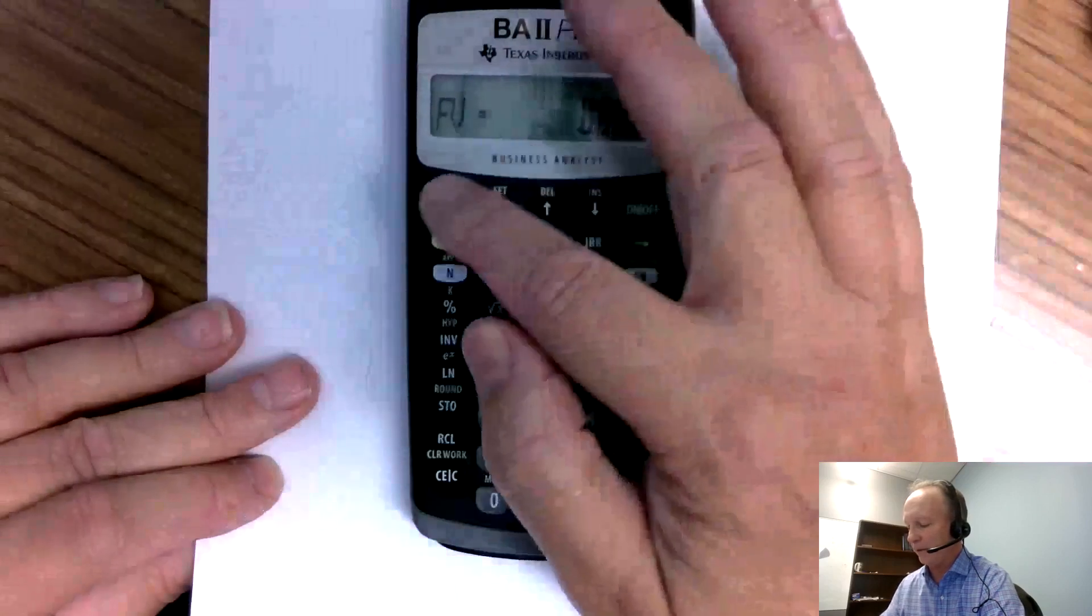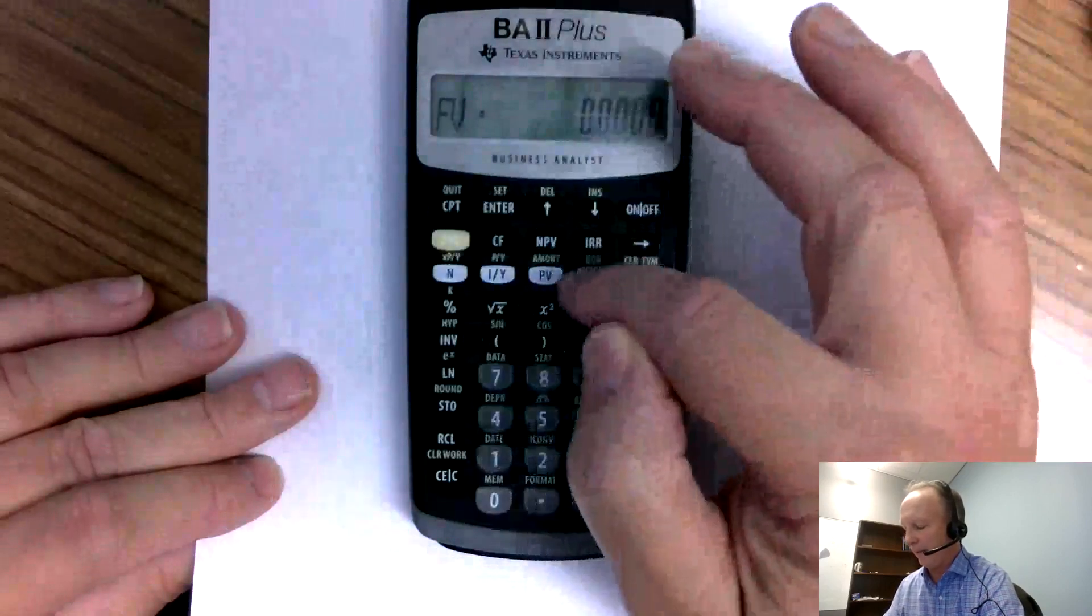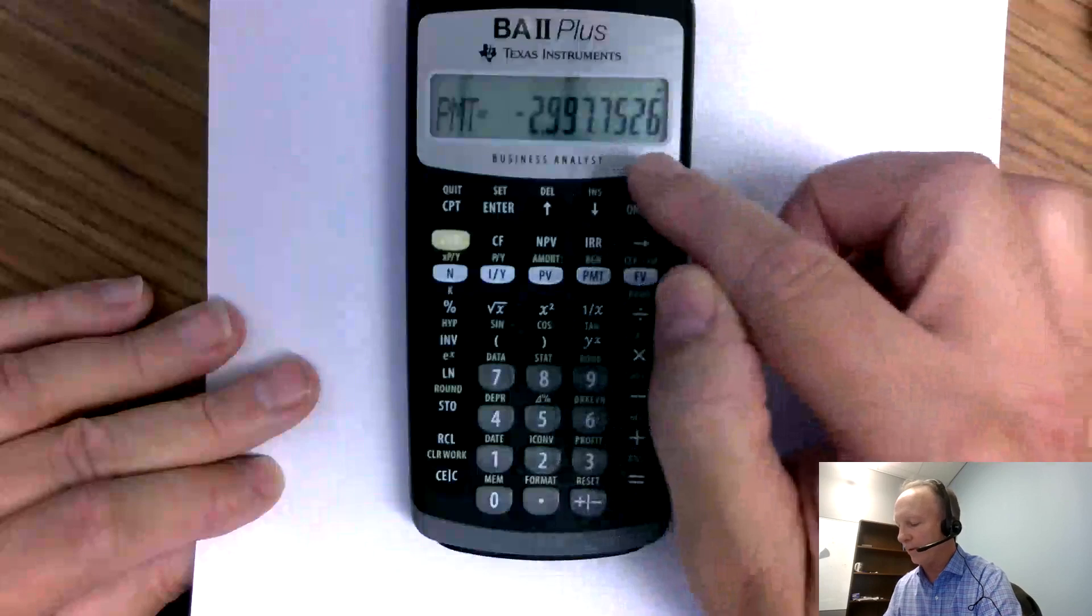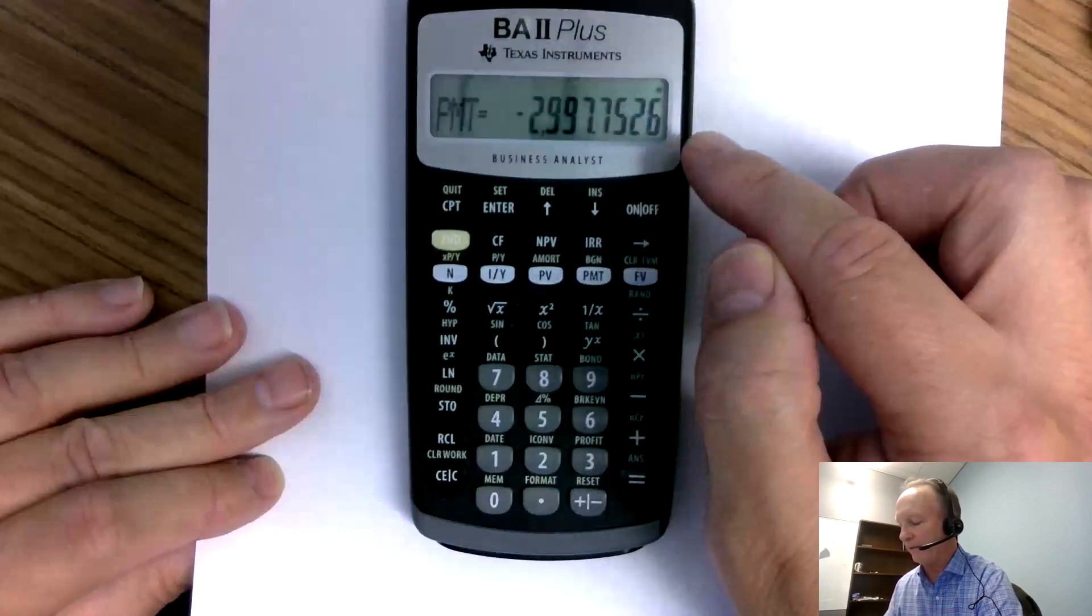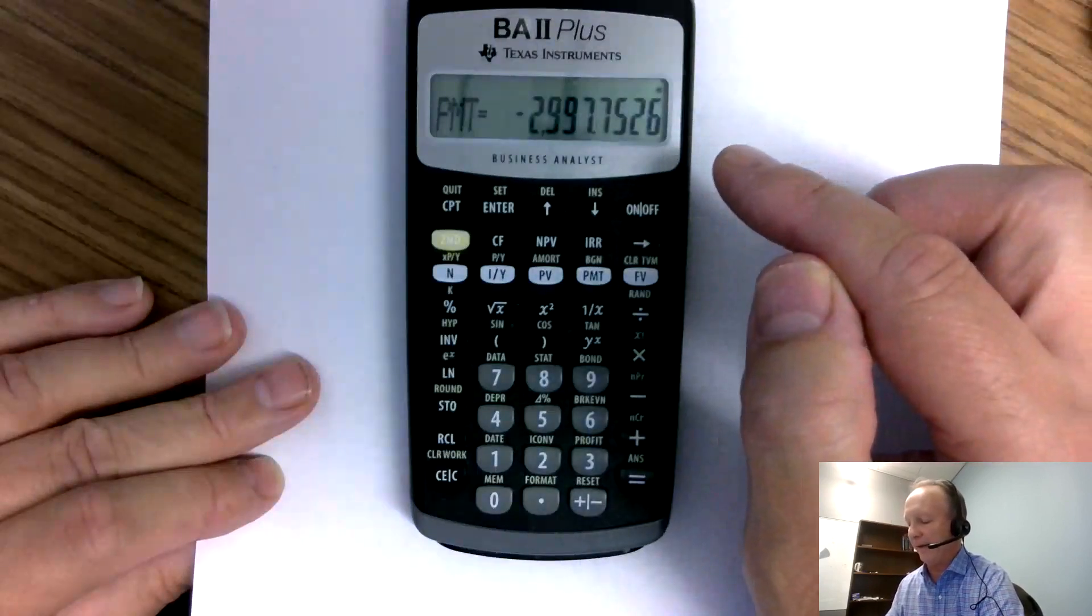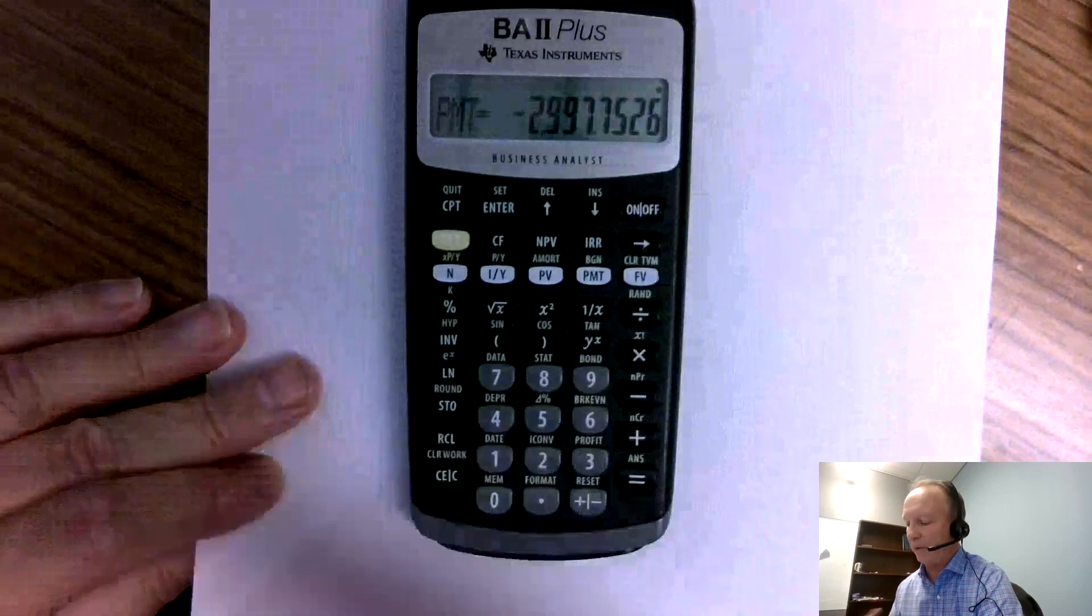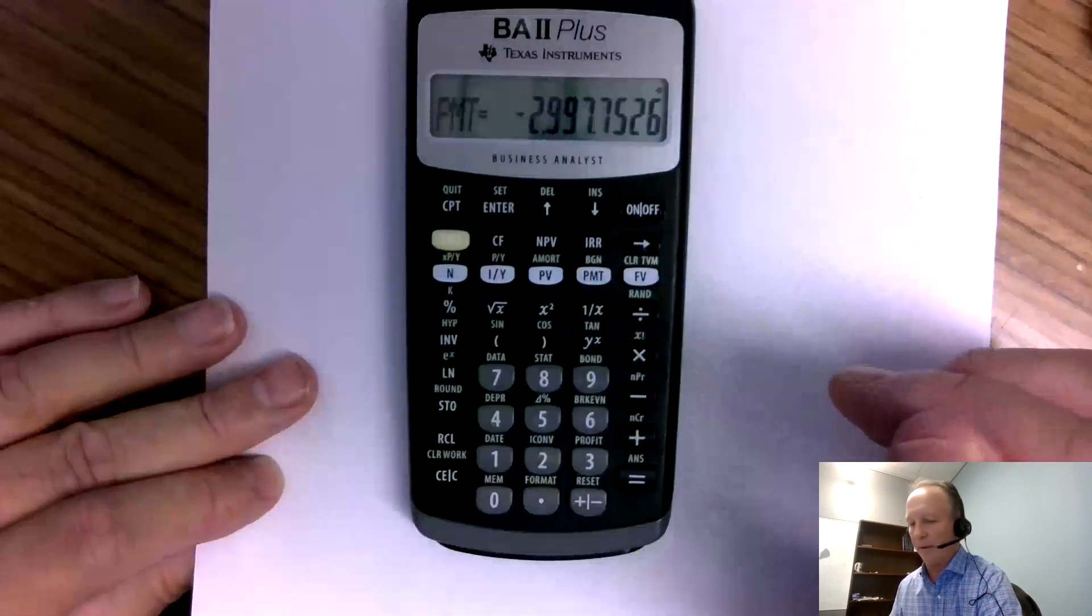So we've kind of hit everything. Now all I have to do is go compute payment, and I get $2,997.75. Of course, it's expressed as a negative number because I pay out that amount of money every single month.